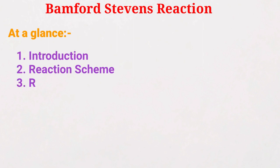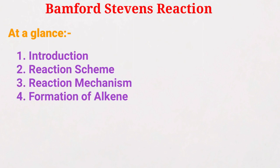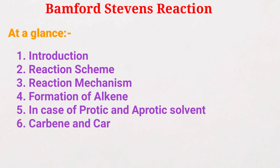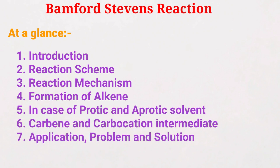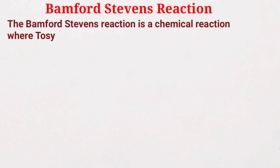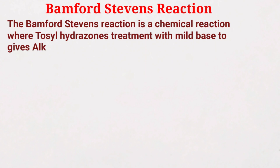Hello friends, welcome back to another tutorial. Here I am going to discuss a very popular name reaction, that is the Bamford-Stevens reaction, and I will cover all points step by step. The Bamford-Stevens reaction is a chemical reaction whereby the treatment of tosylhydrazones with mild basic conditions, or sometimes a strong base, can be used to give alkenes.